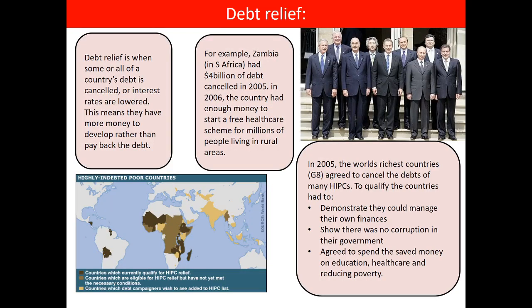Debt relief is about trying to make sure that countries that are in debt to HICs - LICs that owe HICs money because of loans and previous types of aid - can have some of that debt cancelled or the interest reduced. Because some countries get into a position where all they can ever afford to pay off is the interest - they're not paying that loan back, therefore they stay permanently poor.